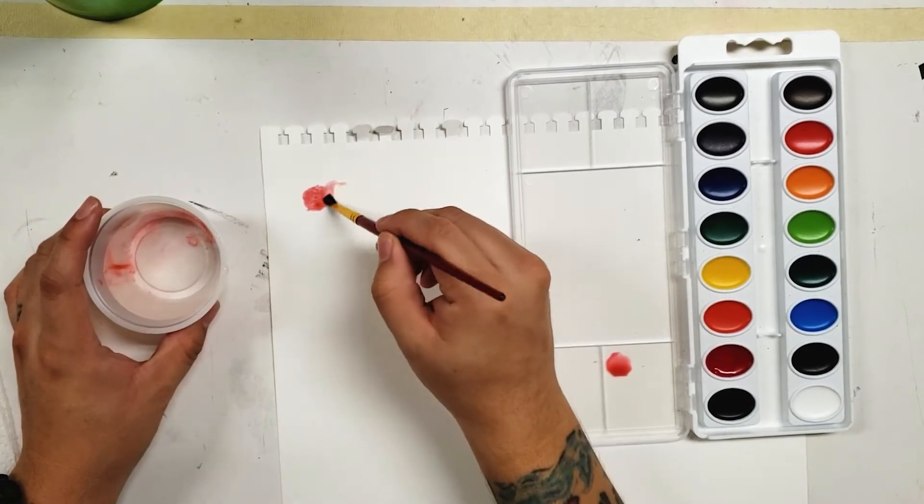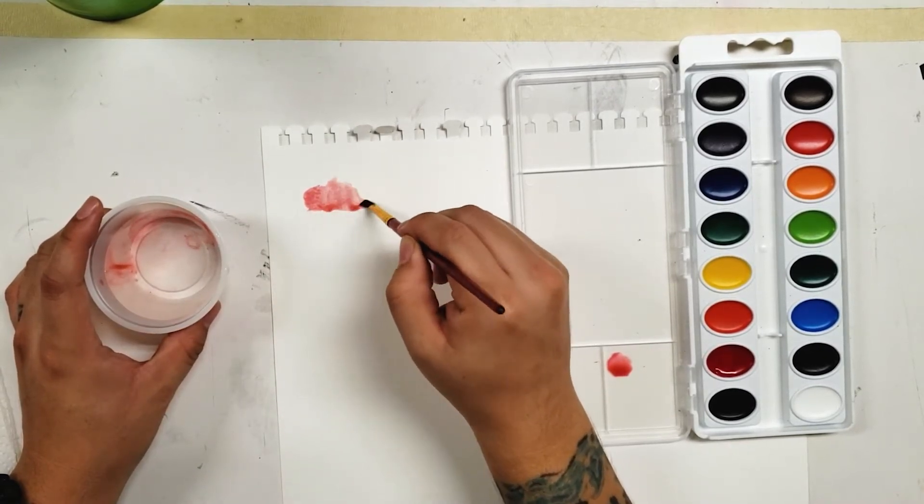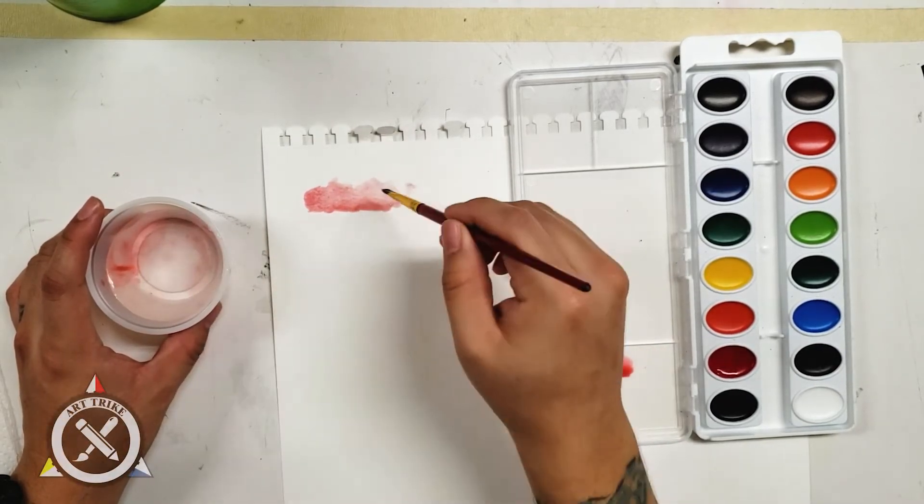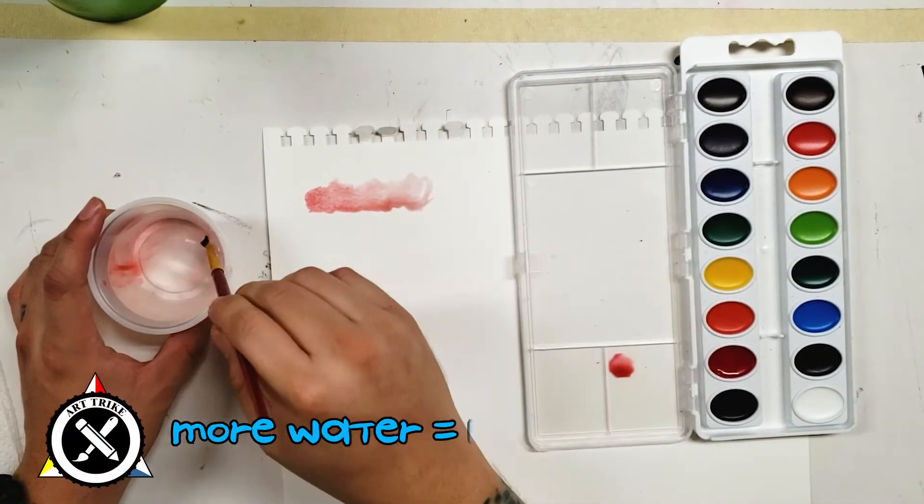So when you're painting with watercolor, the amount of water mixed with pigment will determine how light your color is. The more water there is, the lighter it becomes.